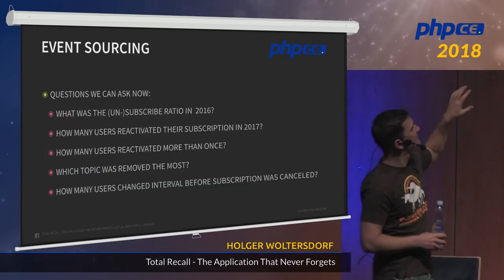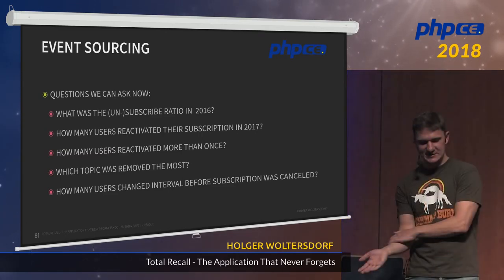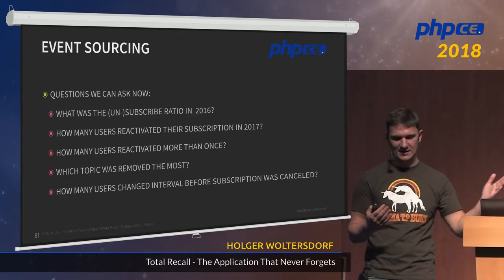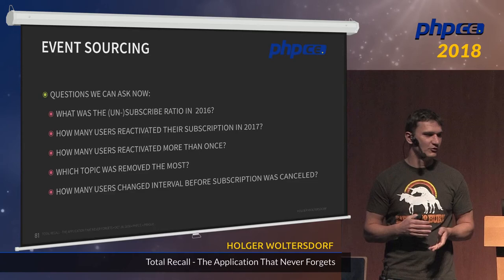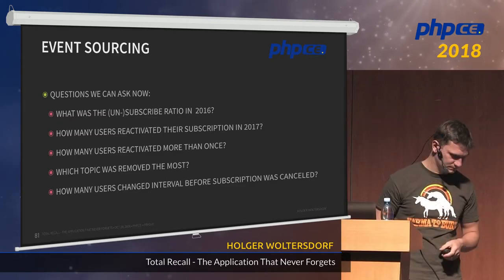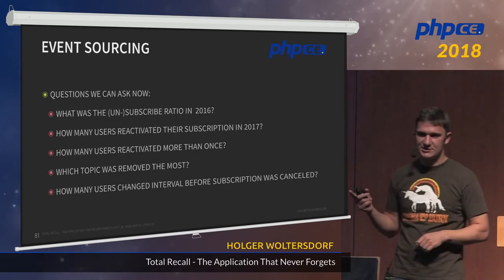What questions can we now ask after applying event sourcing to our newsletter subscription? How big was the unsubscribe ratio in 2016? How many users reactivated their subscription in 2017? How many users reactivated more than once? Which topic was removed the most? How many users changed the interval before the subscription was cancelled? This information is very valuable to your business data analyst to optimize the newsletter subscription process. The good thing is you may not have had those questions when you started implementing, but when the data analyst comes asking, you can say 'I can answer them because I have all the information in my event store.'